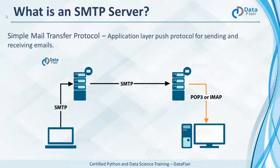The server keeps listening for a request. Being the client, we open a TCP connection to the server and then send the mail. The server detects this and initiates a connection on port 587.